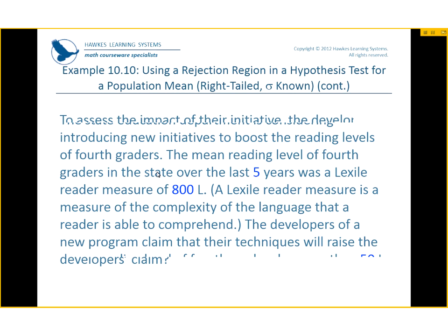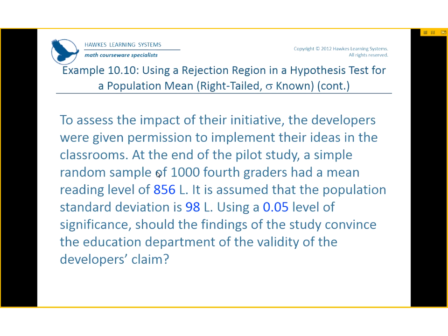To assess the impact of their initiative, the developers were given permission to implement their ideas in the classroom. At the end of the pilot study, a simple random sample of one thousand fourth graders had a mean reading level of 856L. It is assumed that the population standard deviation is 98, using a 0.05 level of significance. Should the findings of the study convince the education department of the validity of the developer's claim?